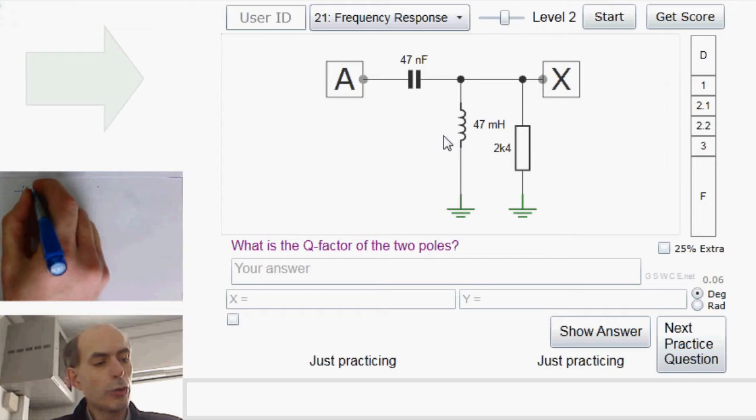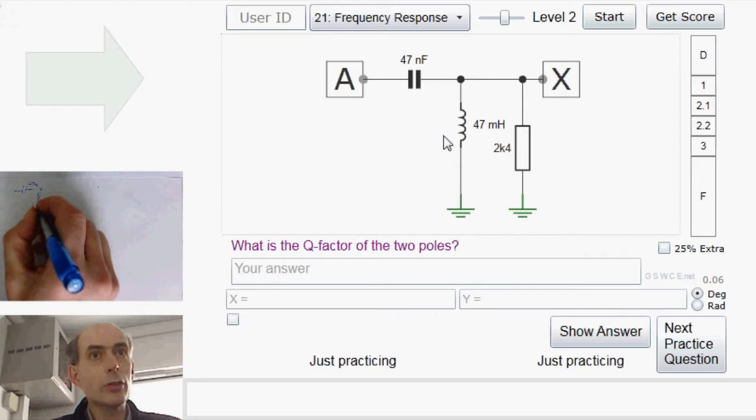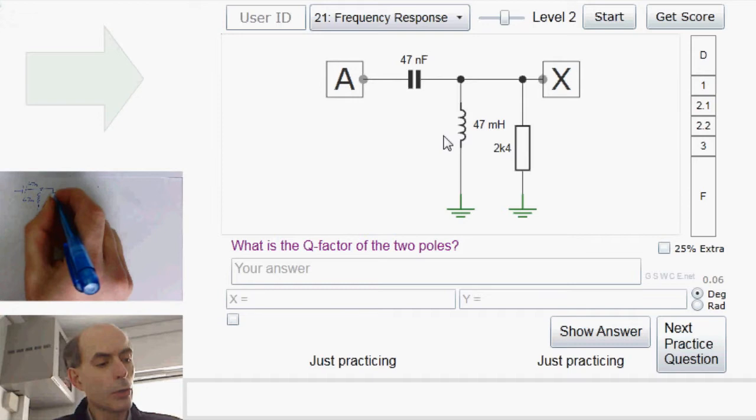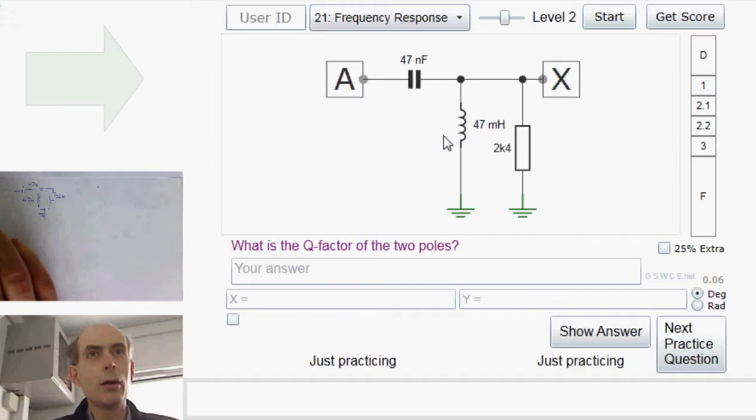We've got a 47 nF capacitor there. We have an inductor, which is 47 mH, and we have a resistor, which is 2k4.